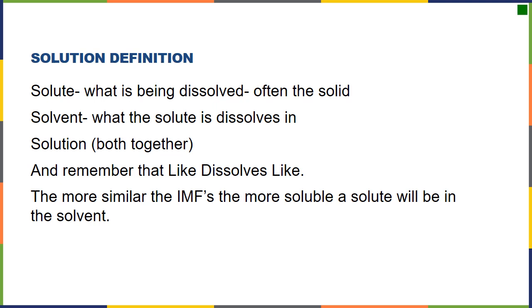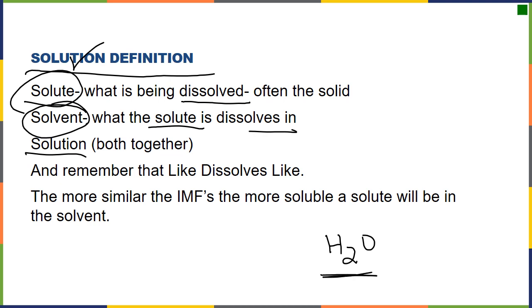All right, we're in chapter 11 and we're looking at solutions. Now we know a solution by definition is a mixture of a solute and a solvent. There are multiple definitions on these guys, but in general, what is being dissolved is going to be the solute. What the solute is dissolving in is the solvent. If we put anything in water, even if water seems like it's by far the smallest component, water is always going to be the solvent.